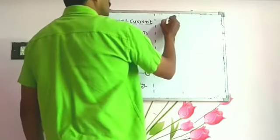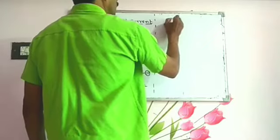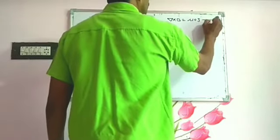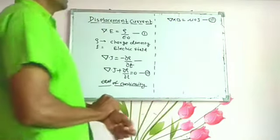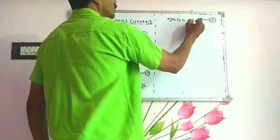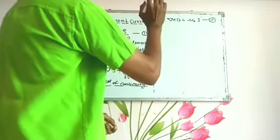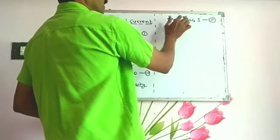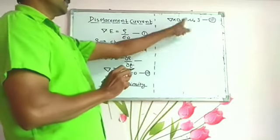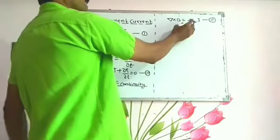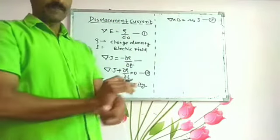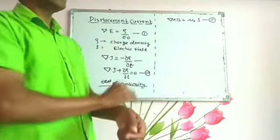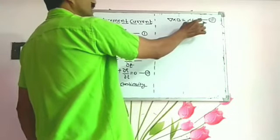In Ampere's Law, we know that del×B = μ₀J, where μ₀ is the permeability and J is the current density. This is the differential form of Ampere's Law. This law is valid for steady current, but for a time-varying electric field — that is, for non-steady current — there is an inconsistency in Ampere's Law.